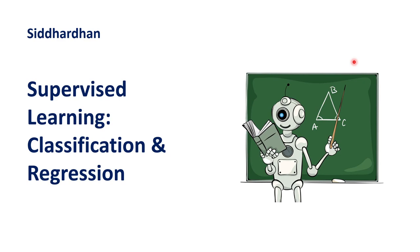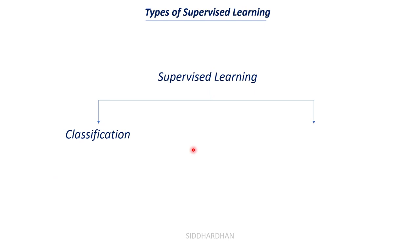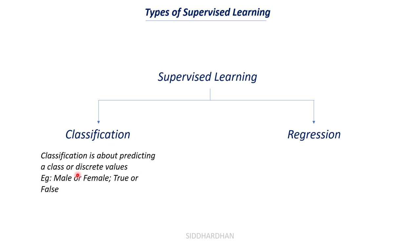Now let's move on to the types of supervised learning: classification and regression. Classification is about predicting a class or discrete values — for example, male or female, or true or false. In classification, we have several data points and we try to say what class a particular data point belongs to. We can build a system that tells you whether an image is an apple or a mango, or whether a person has diabetes or not.